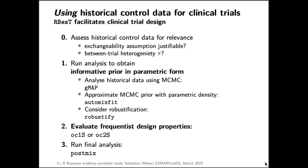Once you have compiled the dataset and made these assessments, you run the analysis to obtain an informative prior in parametric form. You do this in RBesT with the gMAP command to analyze the historical data using MCMC. The MCMC result is then approximated with a parametric density using the automix fit function, and finally we strongly recommend to robustify the so-obtained informative MAP prior.